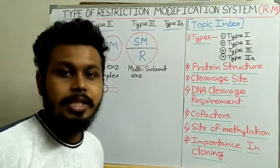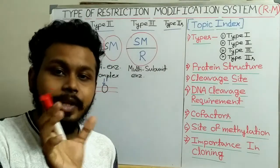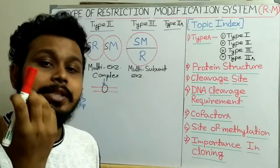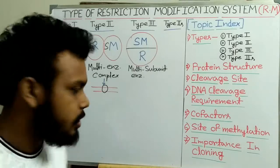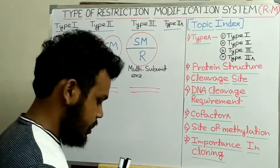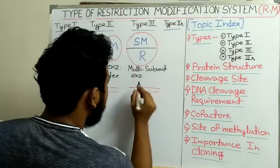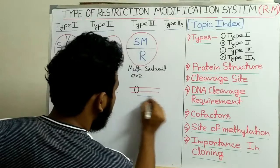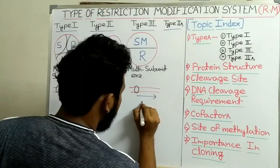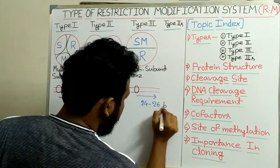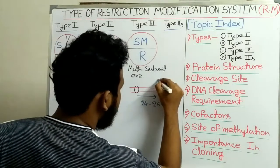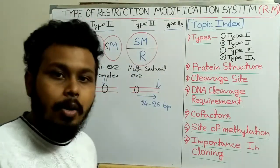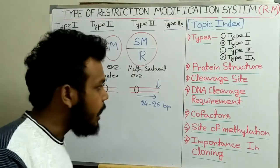The Type 3 restriction enzyme specifically recognizes a particular sequence and then cuts the DNA 24 to 26 base pairs downstream of the recognition sequence.